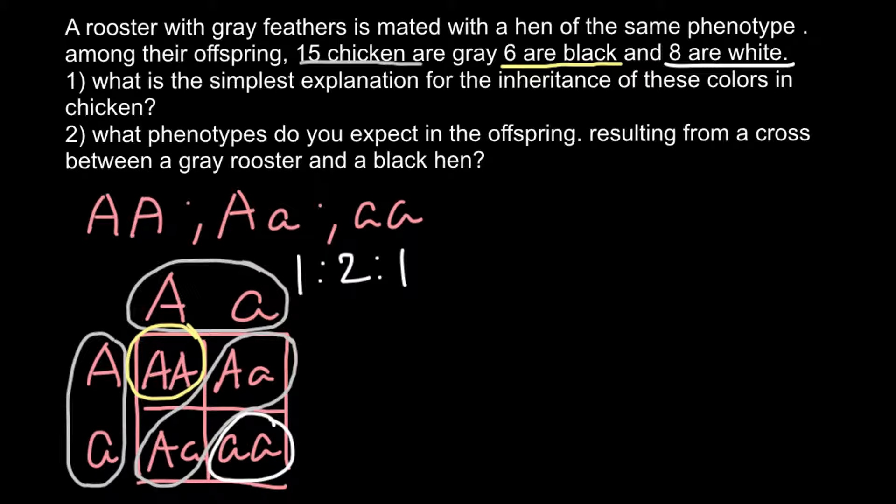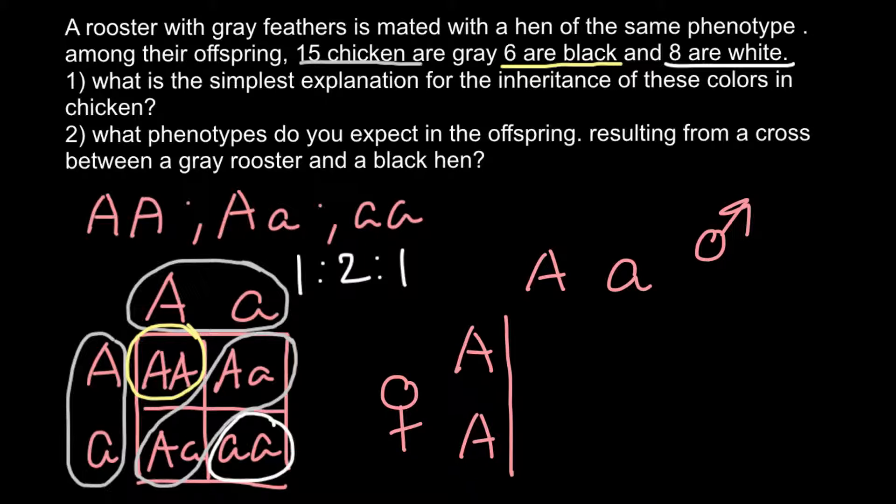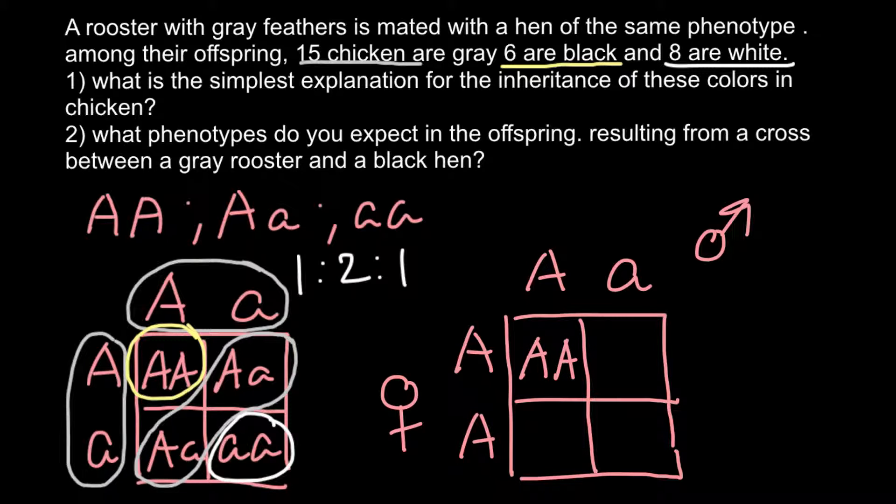So if the rooster is gray, his genotype would be capital A and small a. And the black hen genotype would be capital A capital A. So this is hen and this is rooster. When we build a Punnett square, we can predict genotypes and phenotypes of the following generation. So capital A capital A here, capital A small a here, capital A capital A here, and capital A small a here.